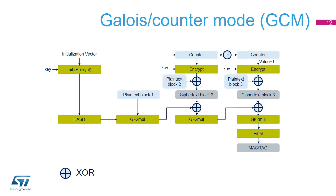In Galois counter mode, or GCM, the plain text message is encrypted while a message authentication code is computed in parallel, thus generating the corresponding ciphertext and its MAC, also known as authentication tag. It's based on the AES counter mode for confidentiality, and uses a multiplier over a fixed finite field for generating the tag. It requires an initialization vector at the beginning. Part of the GCM message — block 1 — might not be encrypted; this block is called the authenticated header.